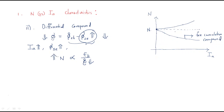So for the differential compound motor: starting from the initial speed at zero load, when the armature current increases the speed also increases. This is the speed vs. armature current characteristic for the differential compound motor.